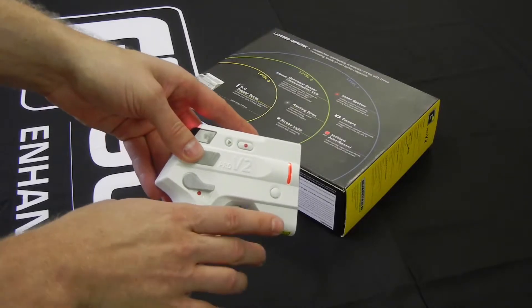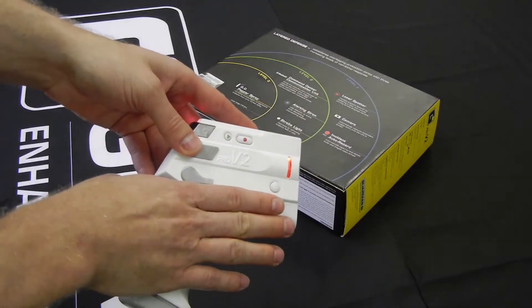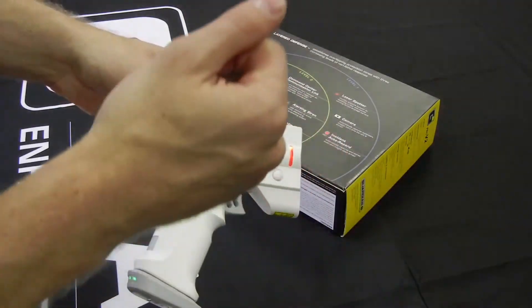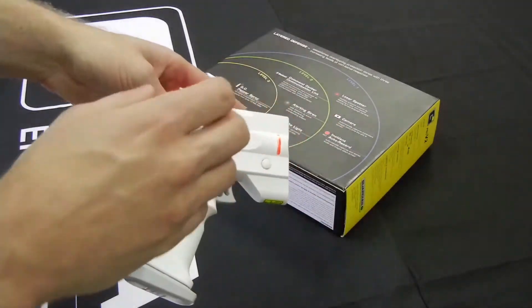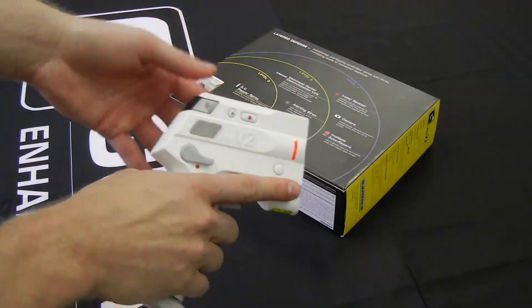Now when we go to a level three response, level two is also going to be activated. So when the OC gets deployed, the light, the siren, the laser, the recording, all of that stuff is still going on if you have it all enabled.